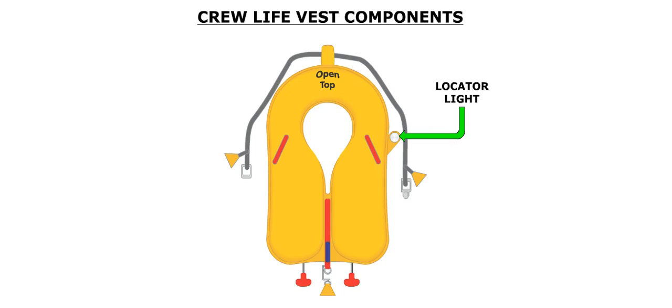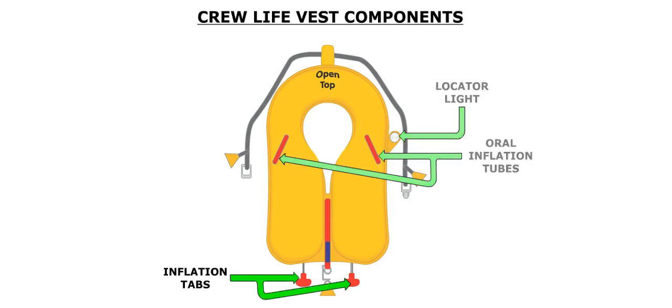Each life vest incorporates a clear locator light, two red oral inflation tubes, inflation tabs, a sea water battery, and a yellow signal light tab.